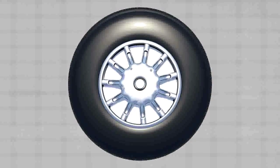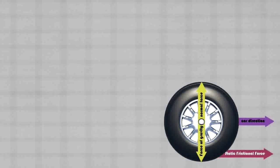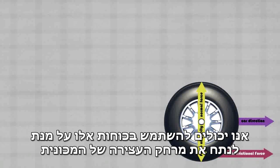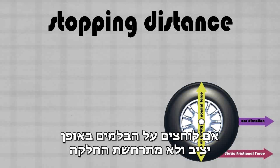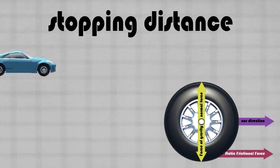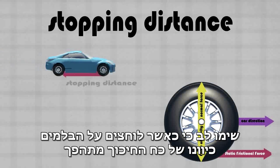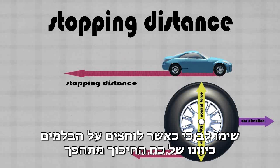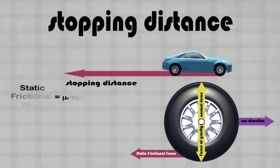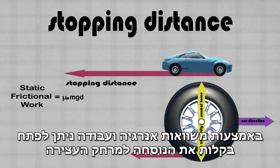These two forces oppose each other and are equal in magnitude. We can use these forces to calculate the stopping distance of the car if the brakes are applied steadily so that no skidding occurs. Notice that as the brakes are applied, the direction of the static frictional force is reversed. Using energy and work equations, we can easily derive an equation for the stopping distance.